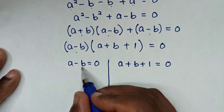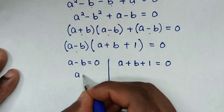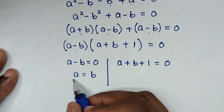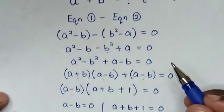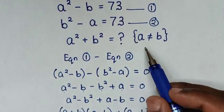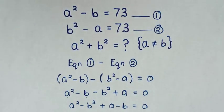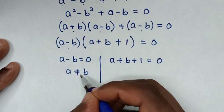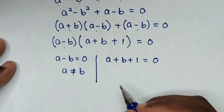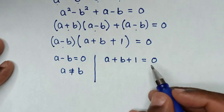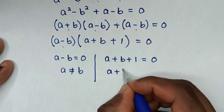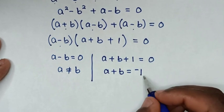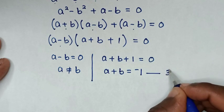From the first solution, taking negative B to the right side gives A equals B. But we recall from our equation that A is not equal to B, so this solution is discarded. From the second solution, taking 1 to the right side gives A plus B equals negative 1. We call this equation 3.